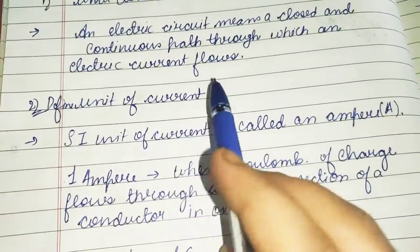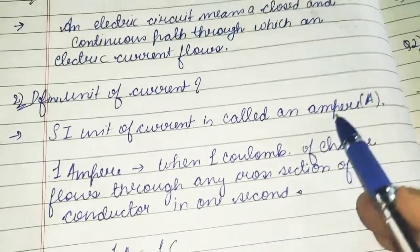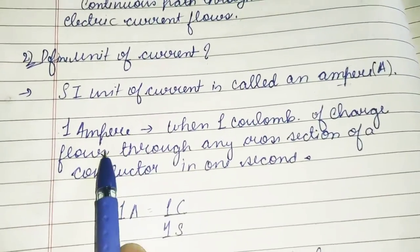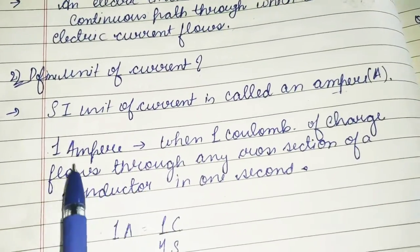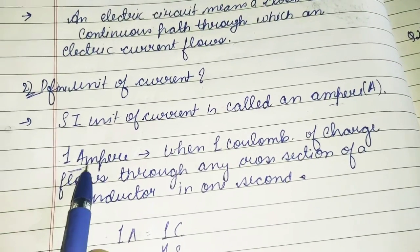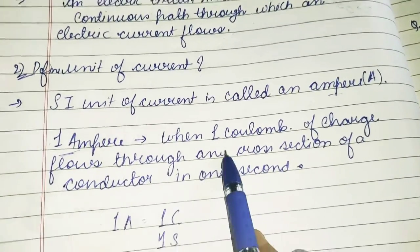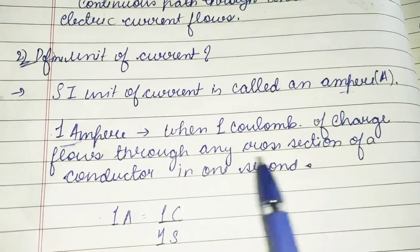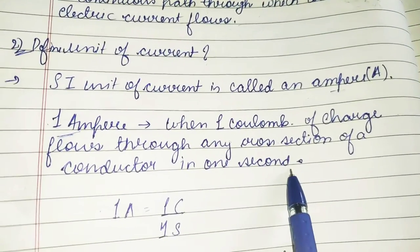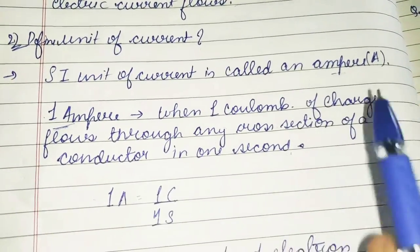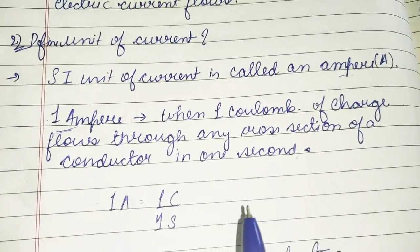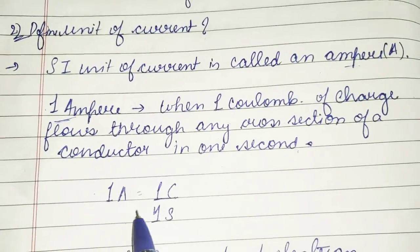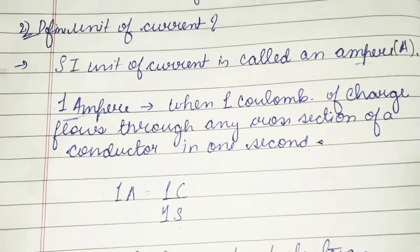Now, define the unit of current. This is an ampere. We have discussed this in this chapter. When one coulomb of charge flows through any cross section of a conductor in one second, then the current flowing is said to be one ampere. It will be very presentable. So, one ampere equals one coulomb by one second.